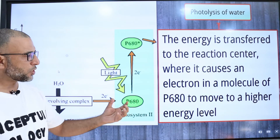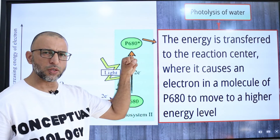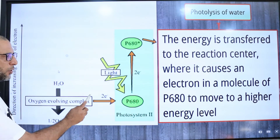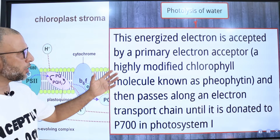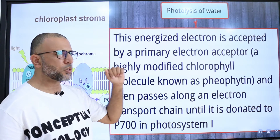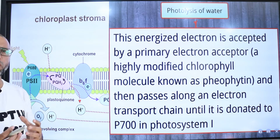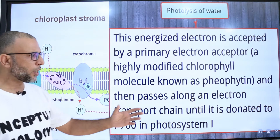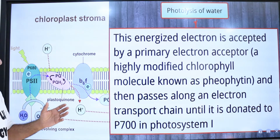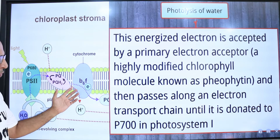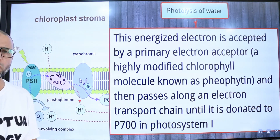From this P680 chlorophyll A molecule, electrons are excited and move to a higher energy level. This energized electron is accepted by the primary electron acceptor, a highly modified chlorophyll molecule known as pheophytin. It then passes through the electron transport chain and moves towards photosystem I, which contains the P700 chlorophyll molecule.